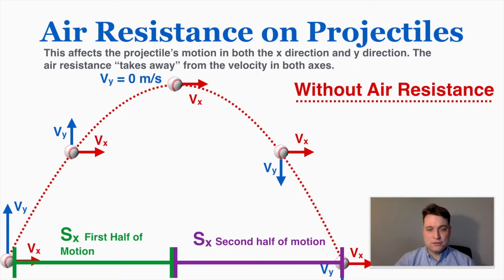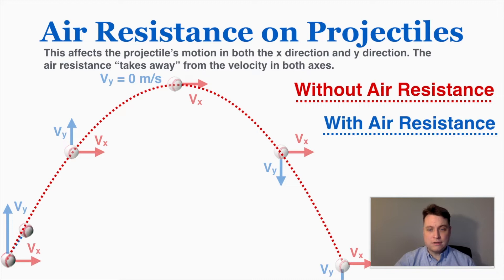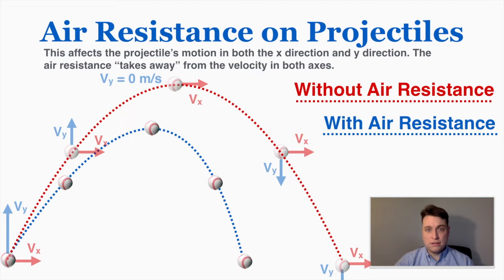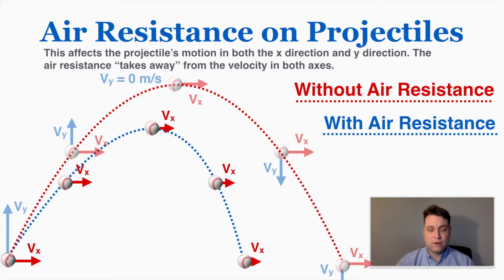Now let's apply air resistance to the ball and see how its motion changes. The path is different — it doesn't go up as high, and it doesn't travel as far. You'll also notice that it travels farther in the first half of its motion than in the second half. This is because as it moves forward, the velocity vector is being slowed down by the force of air resistance, so it's moving slower in the second half of its motion.